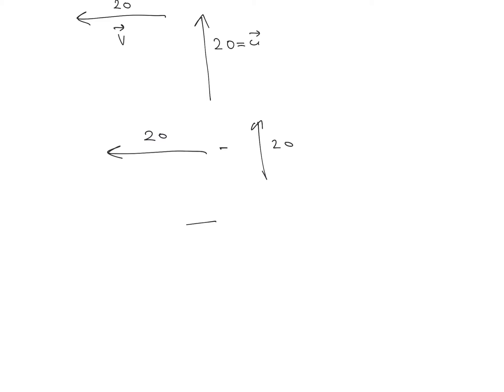We know that v vector minus u vector equals v vector plus negative u vector. We are just reversing the u vector. This becomes 20 vector west plus negative 20 vector north.